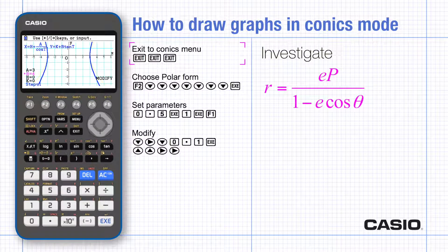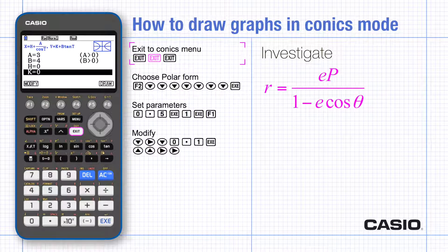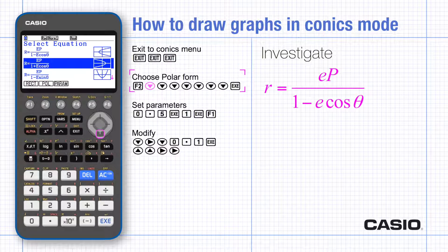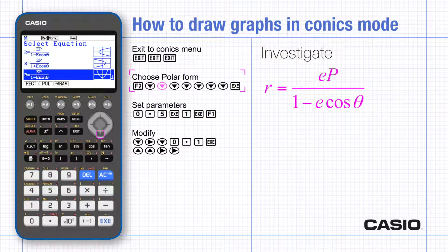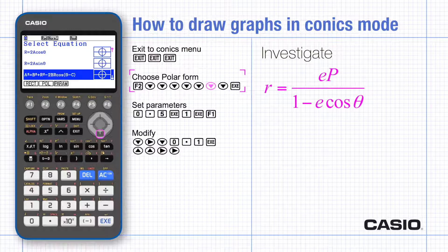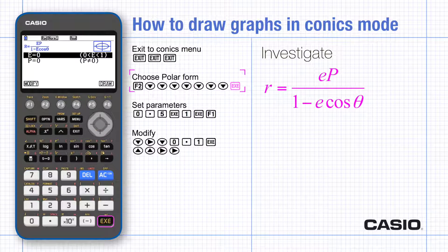Sometimes the equation of a conic is given in polar form, so return to the conics menu and choose polar form. Scroll through the list to the required graph and execute.